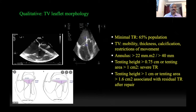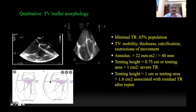For qualitative assessment, remember that minimal TR is present in about 65% of the population — it is a small central jet that does not go more than one centimeter into the right atrium. When assessing tricuspid leaflet pathology, you look at mobility, thickness, calcification, and any restriction of movement. An annular diameter of more than 22 mm/m² or an absolute value of more than 40 mm is generally considered indicative of severe TR. You also assess the tenting distance and tenting height. A tenting height of more than 0.75 cm and a tenting area of more than 1 cm² are generally considered severe TR. If the tenting area is greater than 1.6 cm² or tenting height is more than 1 cm, significant residual TR can be expected even after repair.